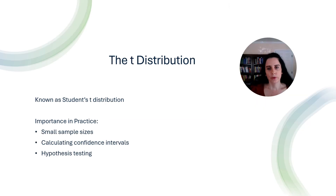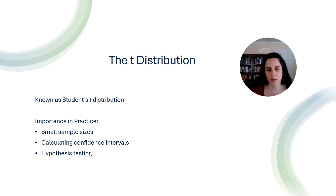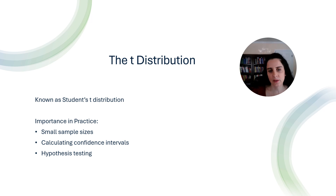The T-distribution is a critical concept in statistics, particularly when dealing with small sample sizes and unknown population standard deviations. It was first introduced by William C. Lee Gossett under the pseudonym Student in 1908 while working at the Guinness Brewery in Dublin. The T-distribution is used extensively in hypothesis testing, confidence interval estimation, and other statistical analysis.